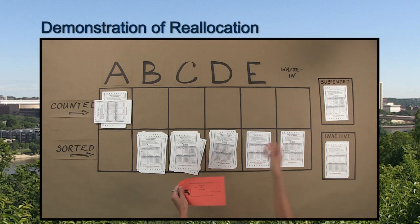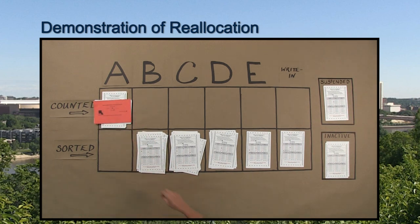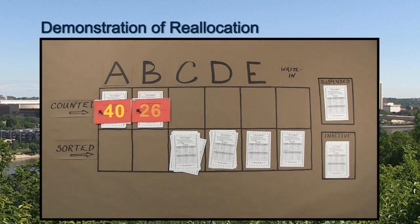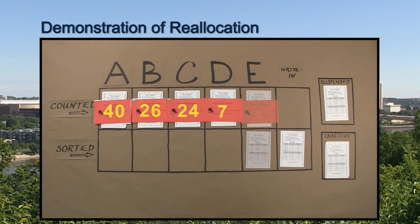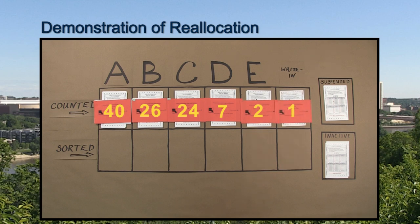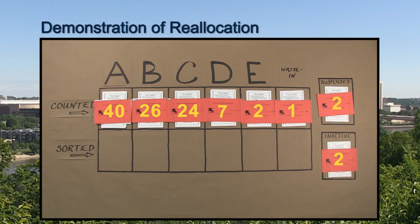One statement is given to an election judge for recording and a copy is placed on top of the ballot pile. In this demonstration, candidate A received 40 first choice votes, candidate B received 26, candidate C 24, candidate D 7, and candidate E received 2. There was one first choice vote for a write-in candidate, two suspended ballots, and two inactive ballots.